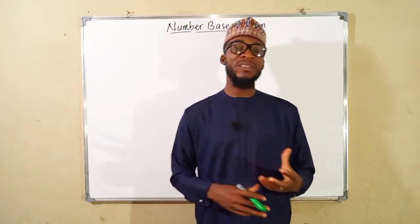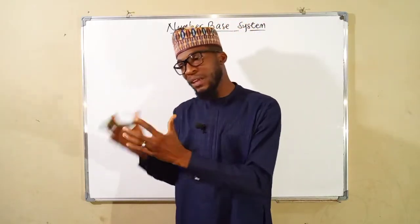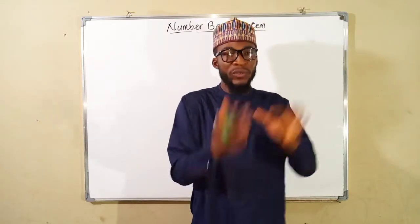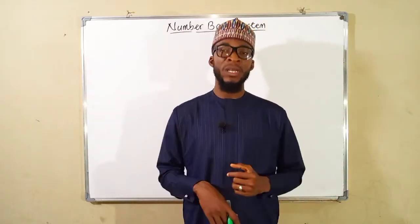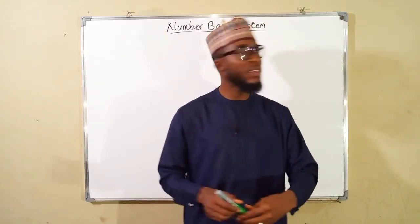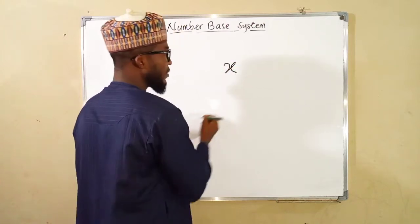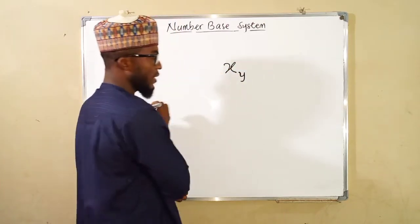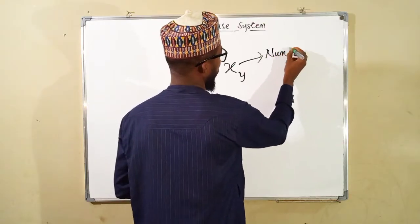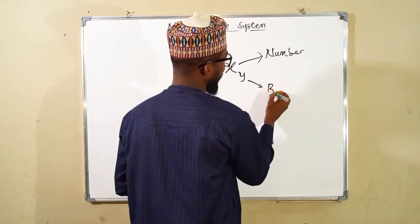In mathematics, the number base system is just the system of counting in bundles where certain units form bundles and subsequent bundles form other bundles. Let me show you how this base is represented. Suppose we have a particular number x subscript y — x here is the number, while y is the base.